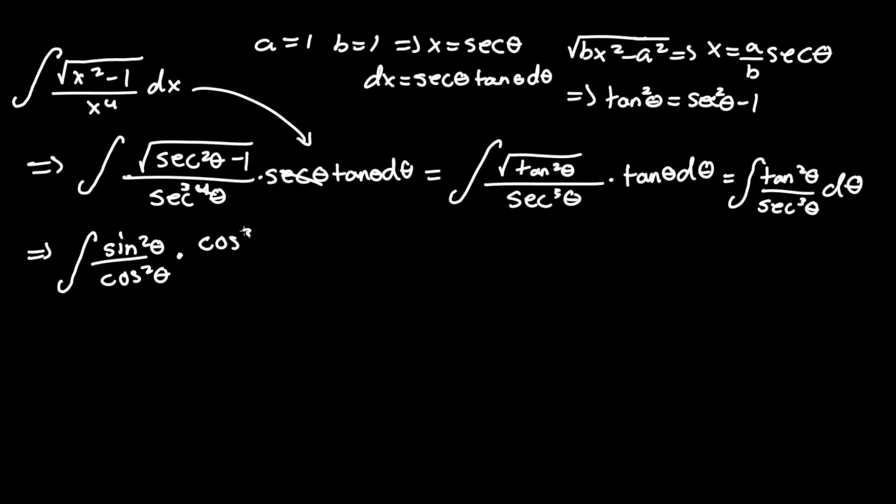This will become the integral of sine squared theta over cosine squared theta times 1 over secant cubed theta, which is equivalent to cosine cubed theta d theta. Now we can see here, two terms cancel out. This will become equal to the integral of sine squared theta cosine theta d theta.